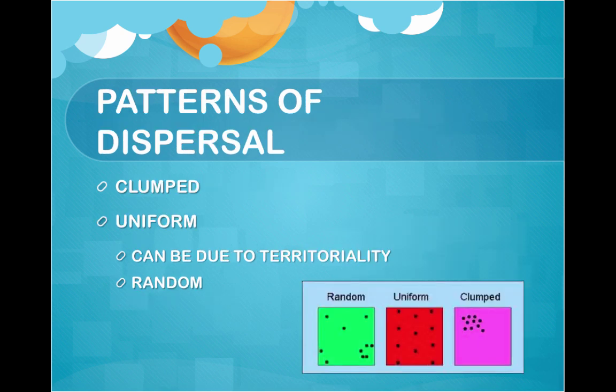Patterns of dispersal include clumped and uniform. Uniform dispersion can be due to territoriality, which is defending a space against others, or individuals can be distributed randomly.